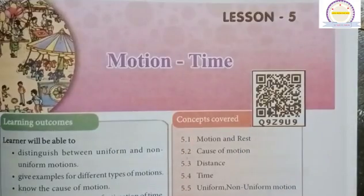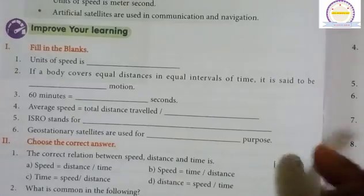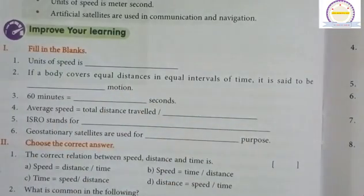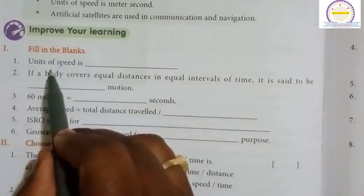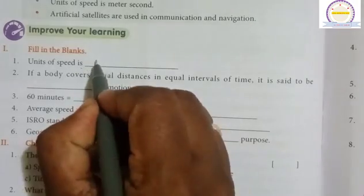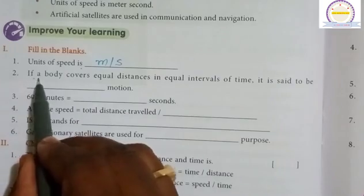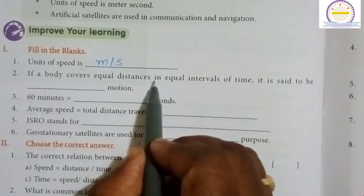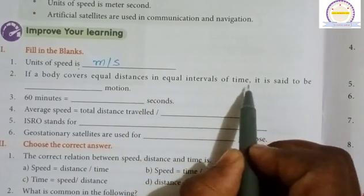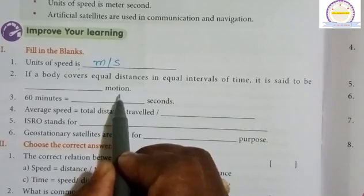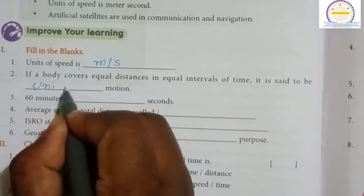Improve your learning. Fill in the blanks. Units of speed is meter per second. If a body covers equal distance in equal intervals of time, it is said to be in uniform motion.